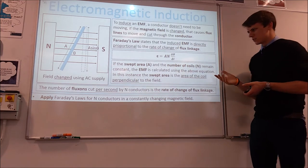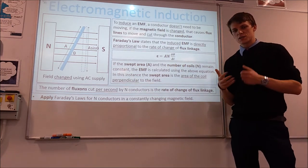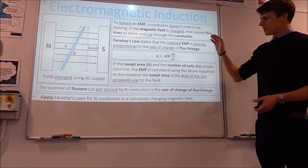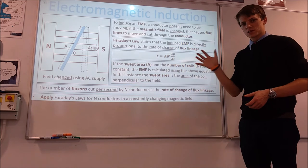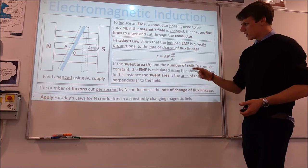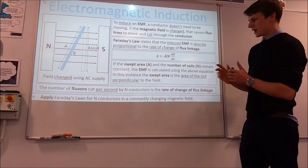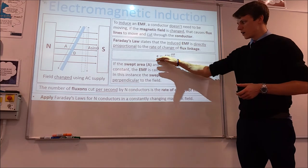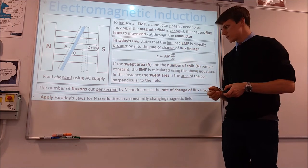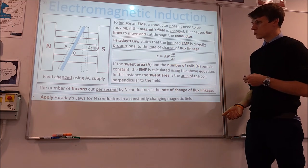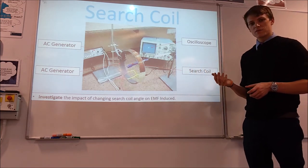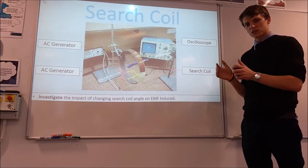Another scenario that comes out of Faraday's law: what if we have a stationary coil inside a constantly changing magnetic field, perhaps created with an electromagnet? In that case, the area swept is simply the area of the coil that's perpendicular to the field — that's constant because the coil is just sitting there. For N coils of wire, multiplying the area by the rate of change of magnetic field strength gives us the EMF. If we know the frequency of the AC supply, we can calculate this rate of change.